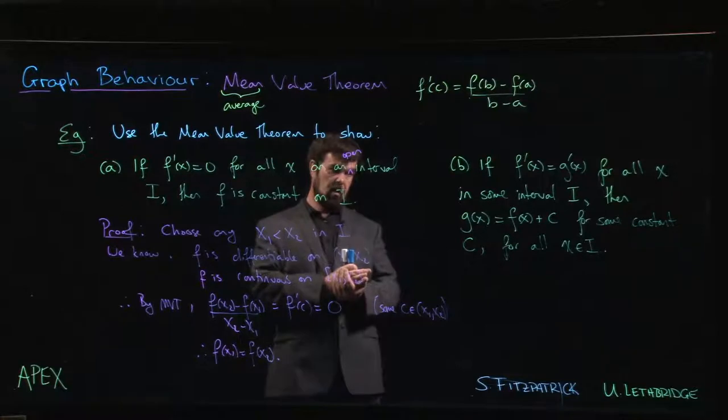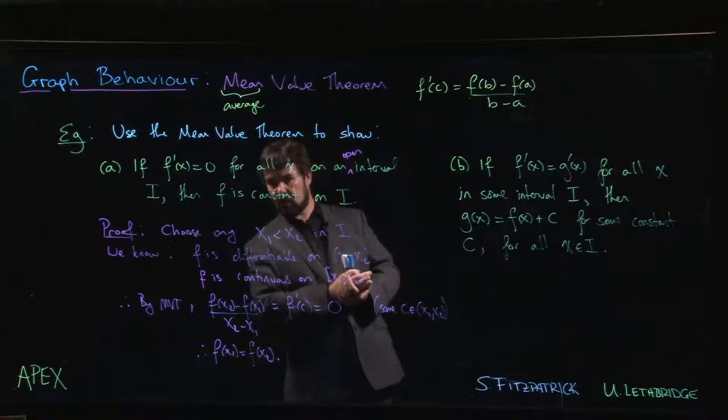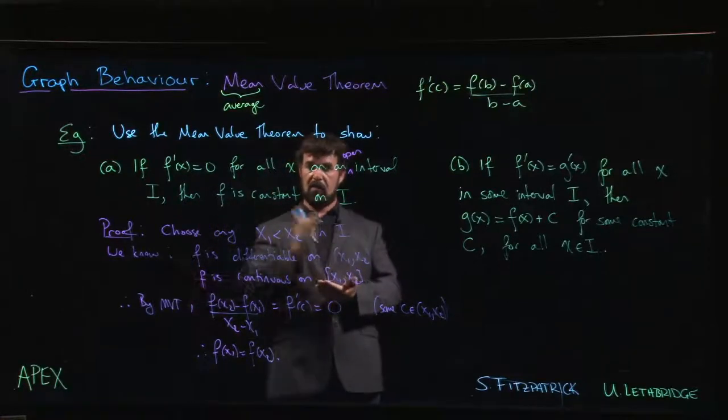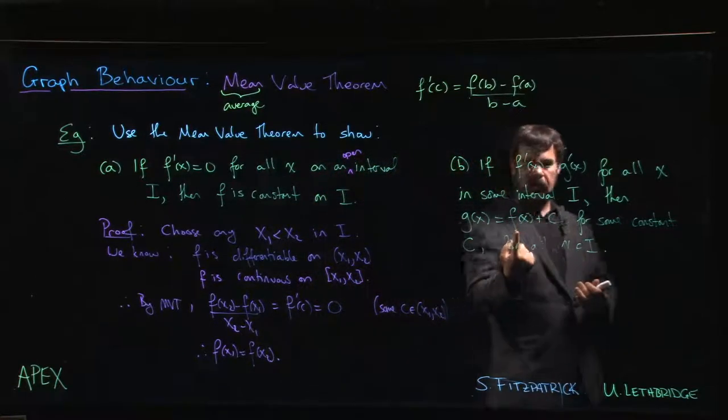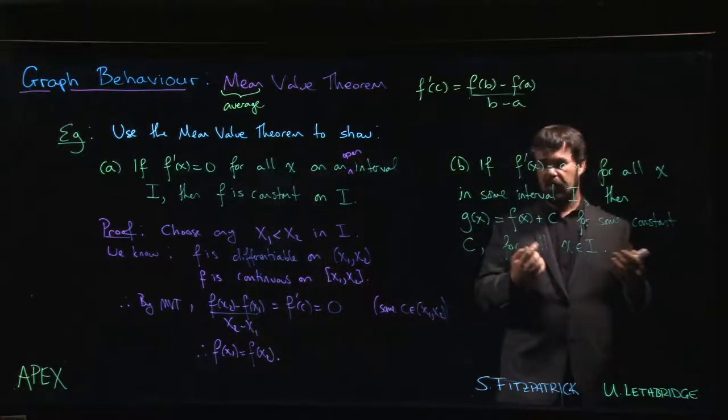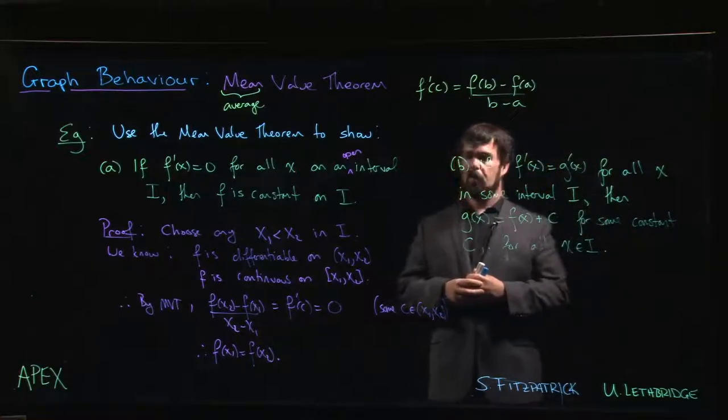This means that once we've found one function whose derivative gives us a particular function we're looking at, we know that every other possible function that could give us that same derivative has to be the one we already found plus a constant. This is going to be really useful.